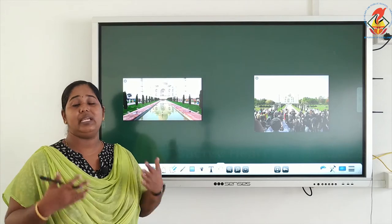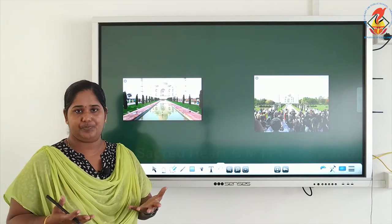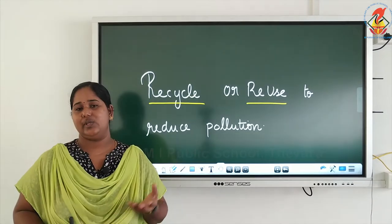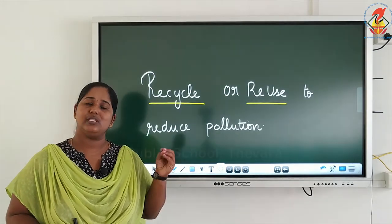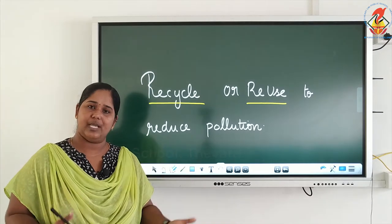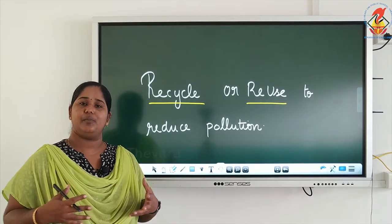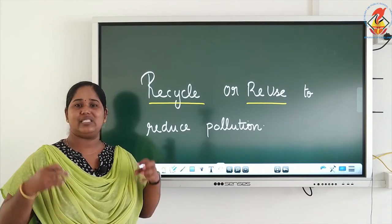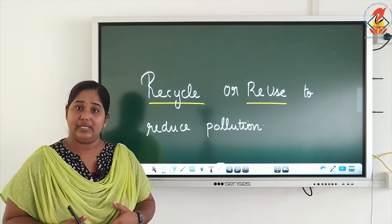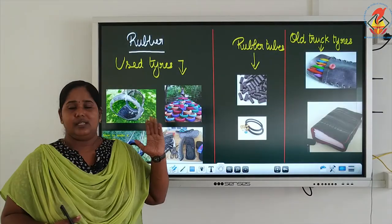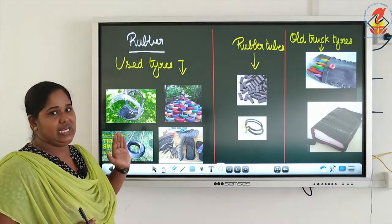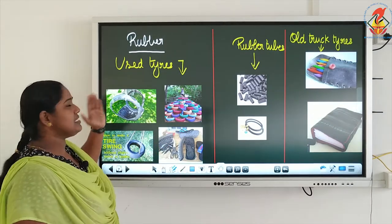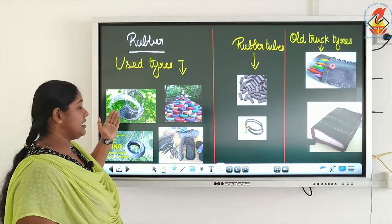From all these things it is clear that pollution should be controlled, otherwise everything around us will be damaged. The best thing we can do is recycle or reuse things. Some objects can be recycled, some can be reused, so that the amount of waste dumped outside is reduced. For example, used rubber tires can be reused — not recycled but reused — such as to make swing seats.